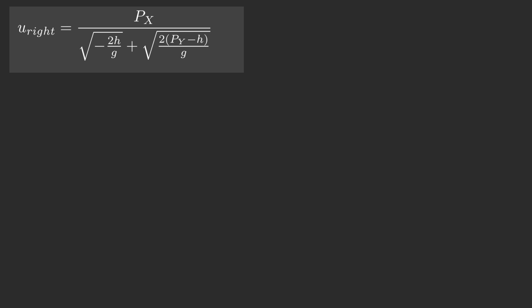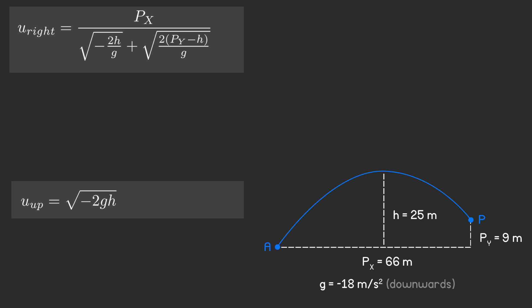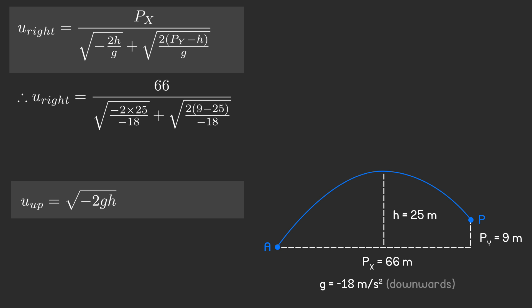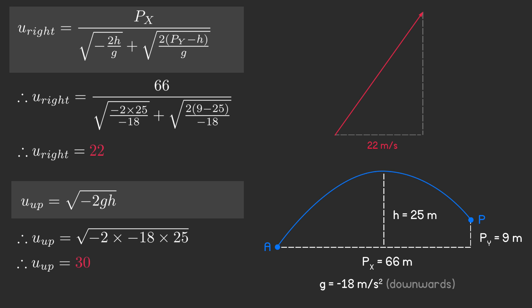Now that we have equations for both the initial horizontal velocity and the initial vertical velocity, it's time to substitute in our actual values. Substituting into the initial horizontal velocity equation, we get a value of 22, and substituting into the initial upwards velocity equation, we get a value of 30. Thus, the final answer is that the initial velocity required is 22 m/s on the x-axis and 30 m/s on the y-axis.